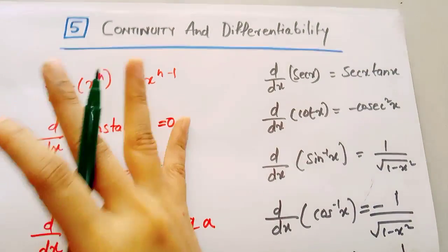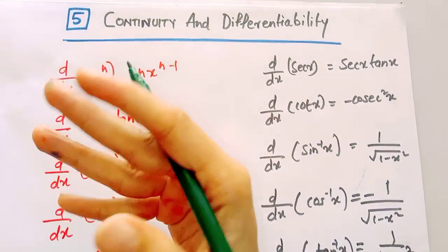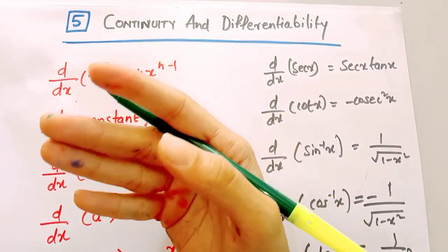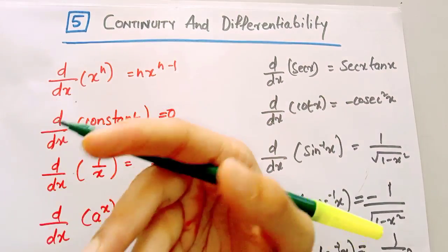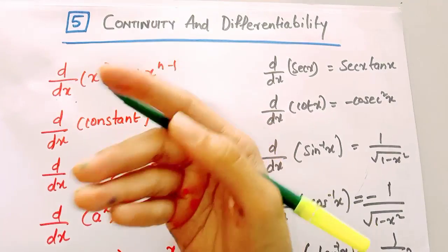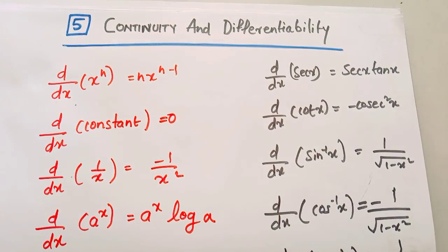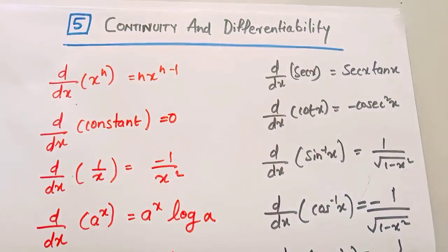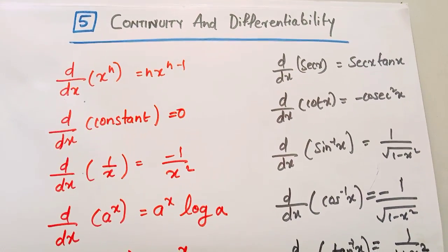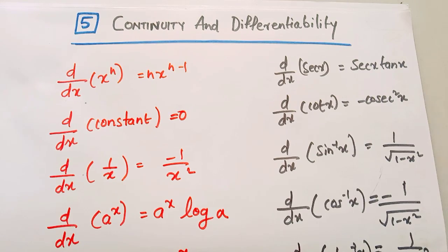If you read the application of the derivative, differential equations, integrals, and application of integrals, you will be able to cover 4 chapters. These 4 chapters are connected. So if you read the base chapter, you will learn integrals and application of integrals — all 4 chapters together. It is difficult to learn, but it is a good approach.